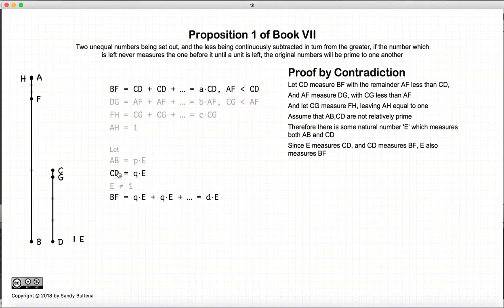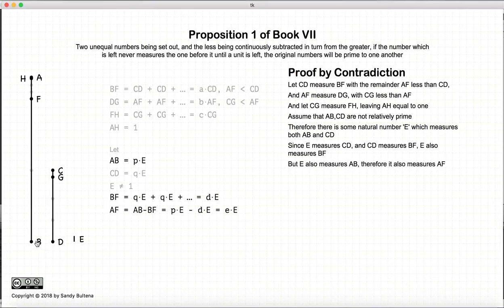Since E measures CD, so CD is equal to E plus E plus E plus E, and BF is equal to CD, which means it's equal to QE plus QE plus E measures BF. So all of this is to say that since E measures CD and CD measures BF, E also measures BF. But E also measures AB. That was our original statement here. So AB is measured by E, and BF is measured by E, which means that AF, which is AB minus BF, so plugging in the numbers, is also measured by E.